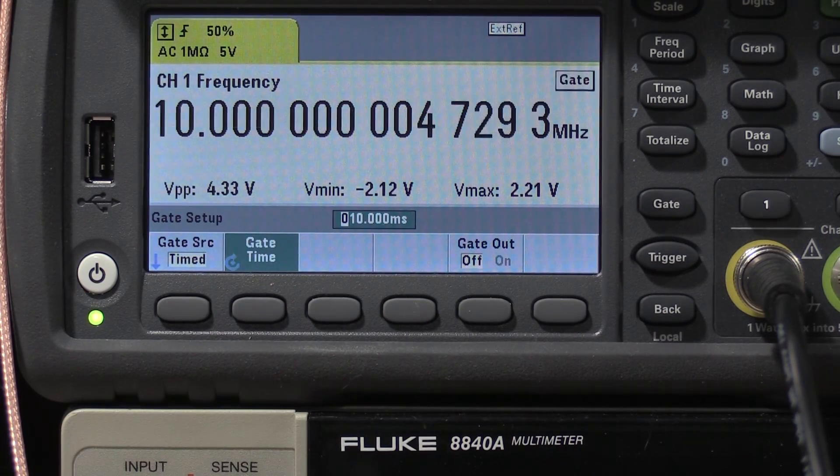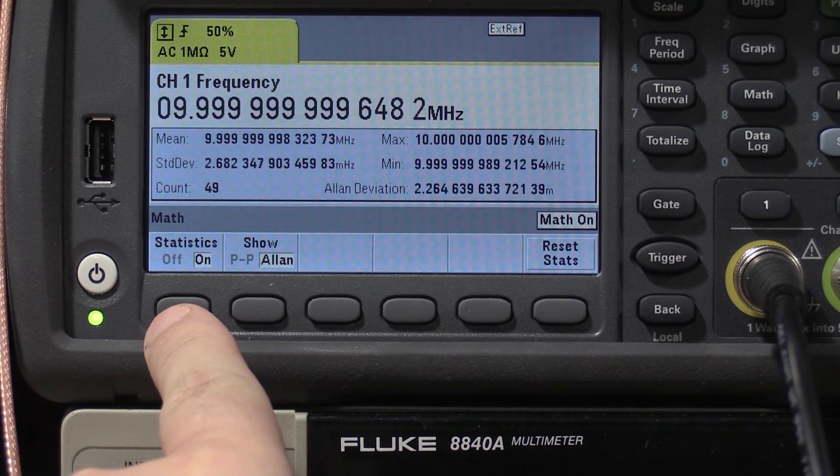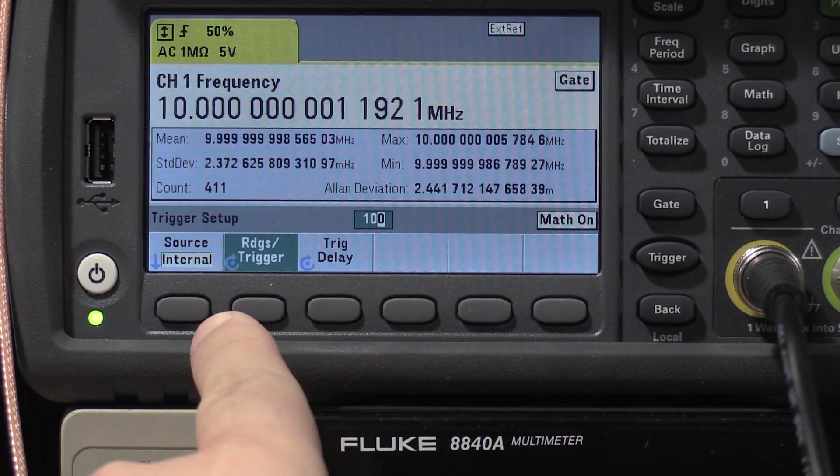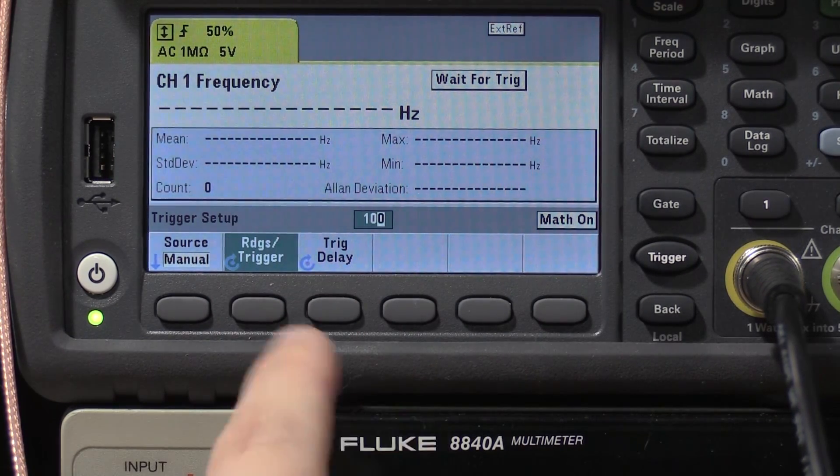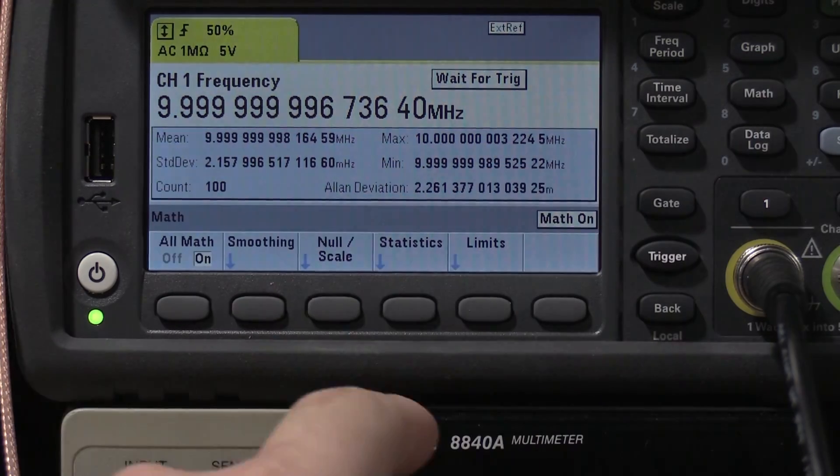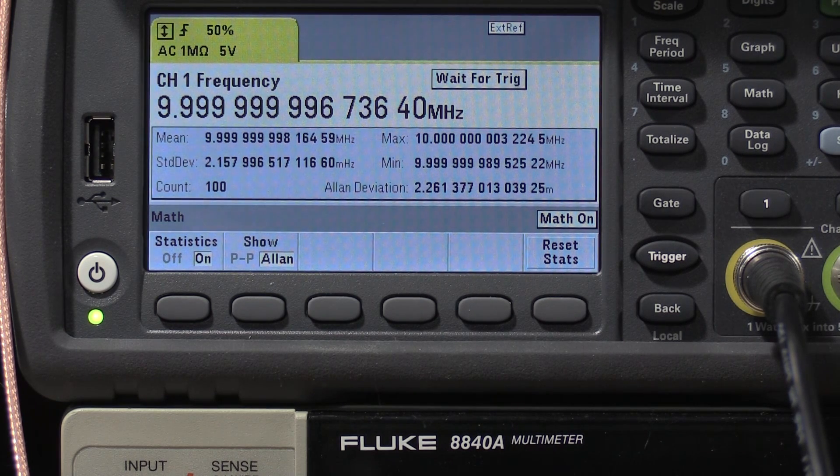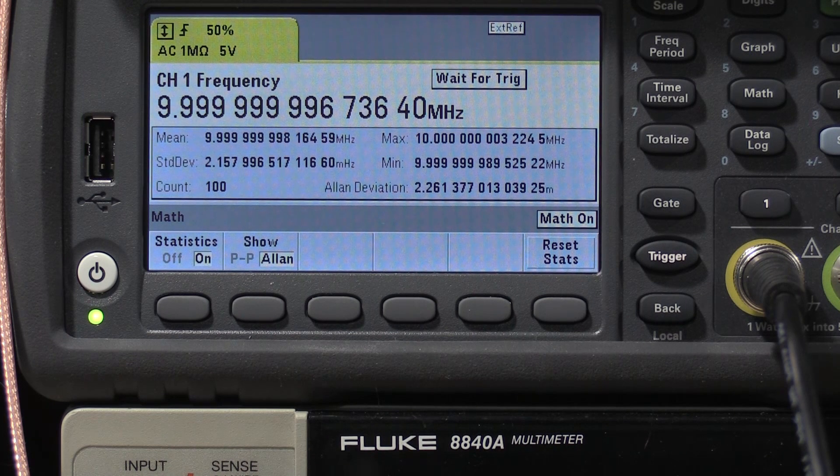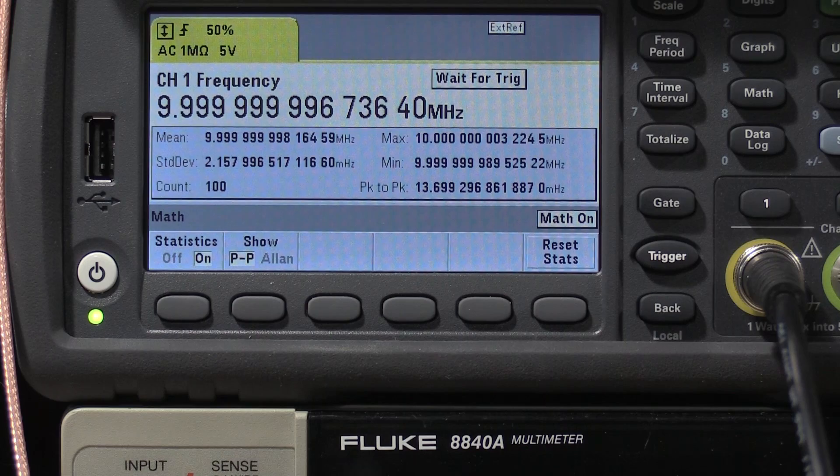We have a gate time of 10 milliseconds, and we're going to turn on the statistics. We're going to do 100 samples, different gate times. We have a 2.261 millihertz Allen deviation at high speed. Our peak-to-peak variance is 13 millihertz. So, it's actually looking a little bit better than the TM.